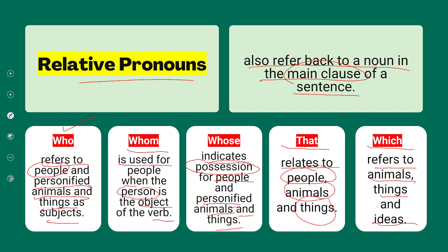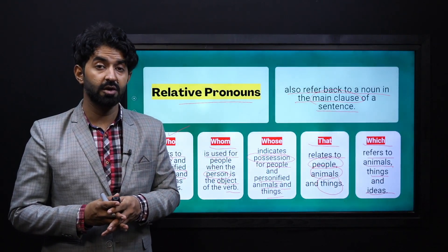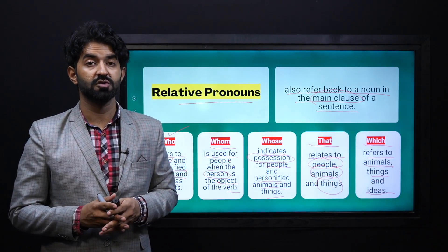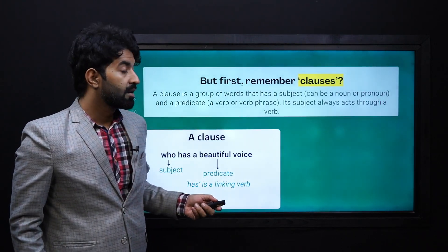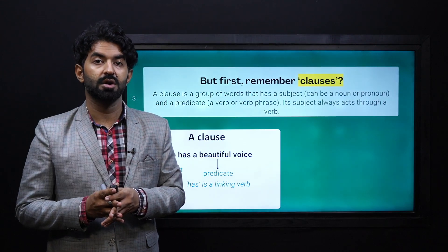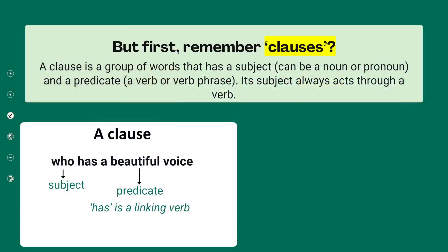All these different relative pronouns are used in different scenarios as we just read. We also talked about the term 'clause.' A clause is a group of words that has a subject — which can be a noun or pronoun — and a predicate, which can be a verb or verb phrase. Its subject always acts through a verb. So a clause has both a subject and a predicate.